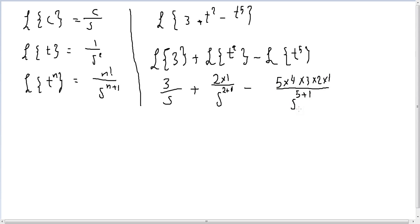Then, this is just finished. If you want to simplify more, so 3 over s, 2 over s cubed minus this. 5 by 4 is 20, 20 by 3 is 60, 60 by 2 is 120 over s to the power of 6.